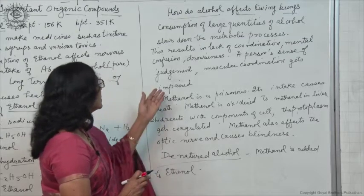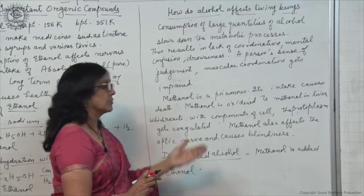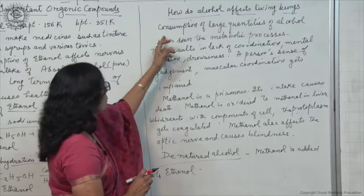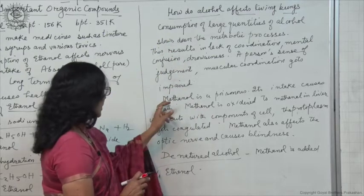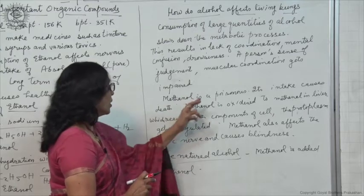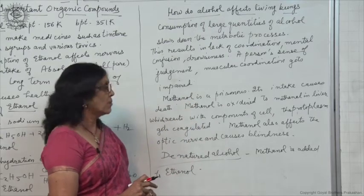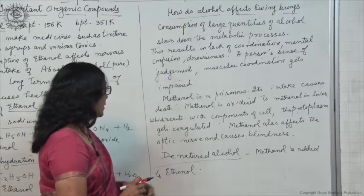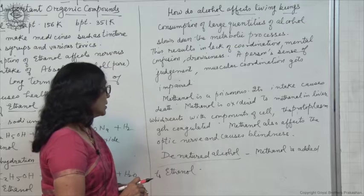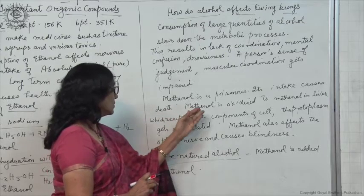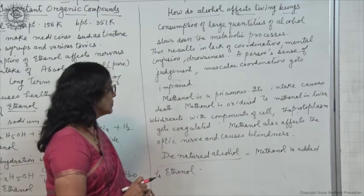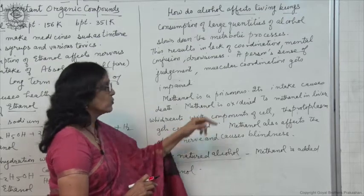Another very poisonous alcohol is methanol. Here we are talking about ethanol, and here it is methanol CH3OH. Methanol is a poisonous compound and if it is taken it causes death straight away.